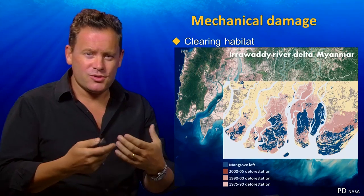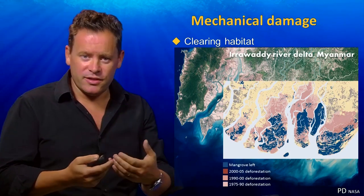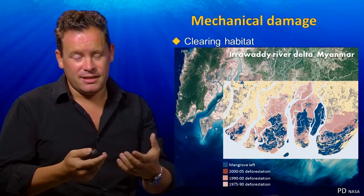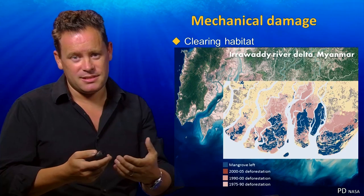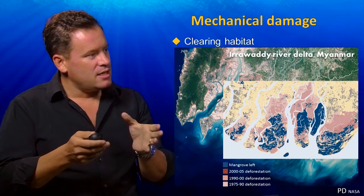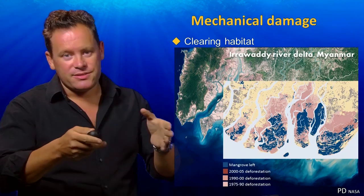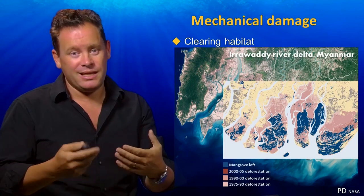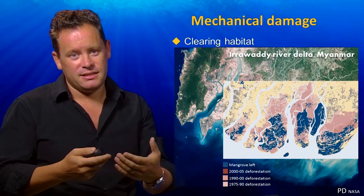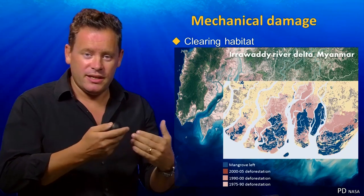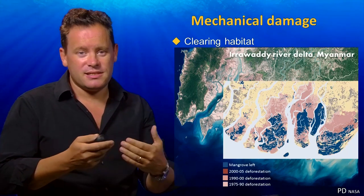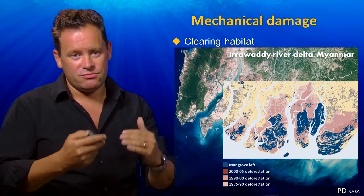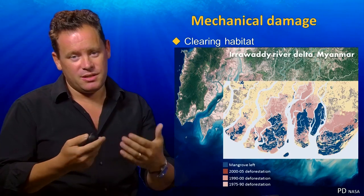Coastal people living there are much more vulnerable to flood events as a result. In 2008, a very large typhoon struck this area with devastating consequences. This is a general problem affecting deltas worldwide — it's estimated that about 85% of the world's major river deltas are flooded every year, and with increasing sea levels, there's expected to be about a 50% increase in the amount of delta regularly going underwater by the end of this century.